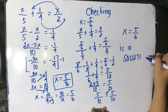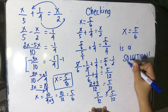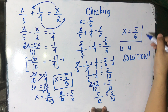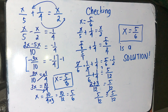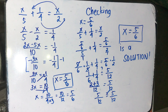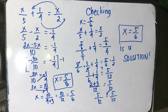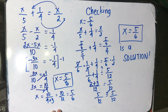Our answer is x equals 5 over 6. Again, there are many ways to solve a rational equation — we can use the least common denominator, multiply by the denominator, or use factorization.